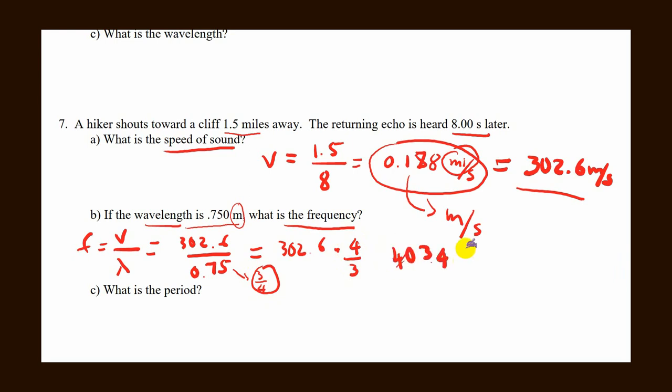Period, as we know, equals 1 over frequency, which equals 1 over 403.4. This will give you 2.48 multiplied by 10 to the negative 3.